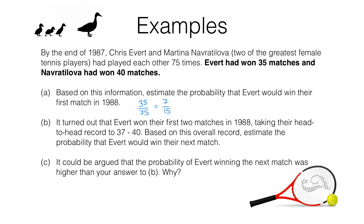In question B, we get a bit more information. It turned out that Evert won their first two matches in 1988, so their head-to-head record becomes 37–40 instead of 35–40. Based on this overall record, we need to estimate the probability that Evert would win their next match. The total number of matches played is now 77 (37 plus 40), and Evert has won 37 of them — giving a relative frequency of 37/77, which we can't simplify, so we leave it as is.